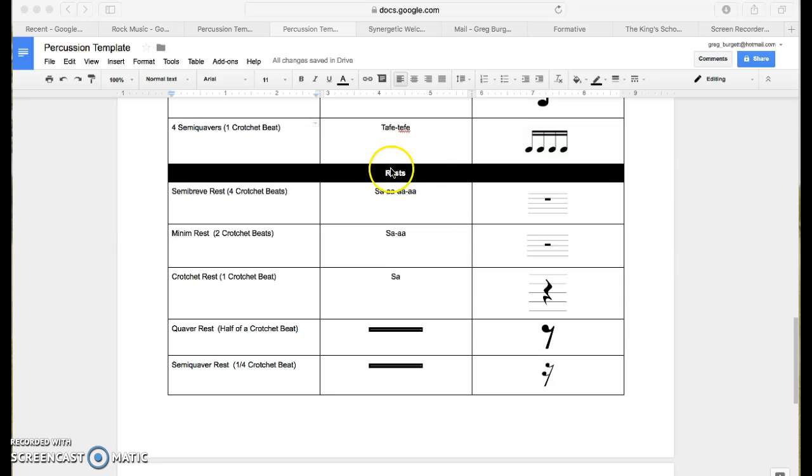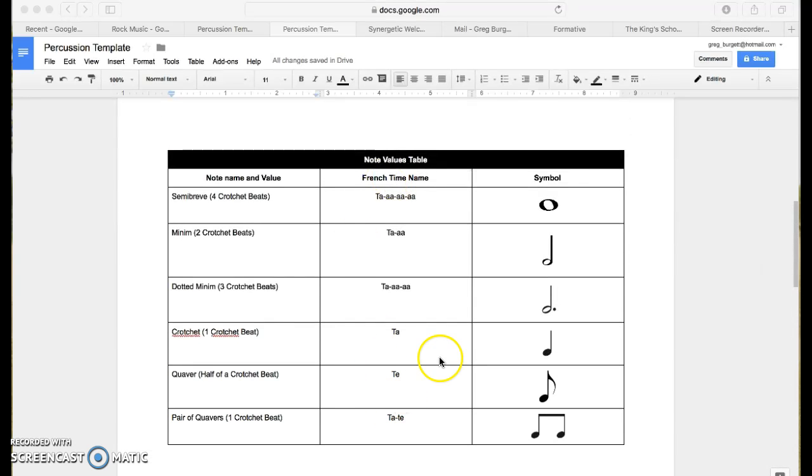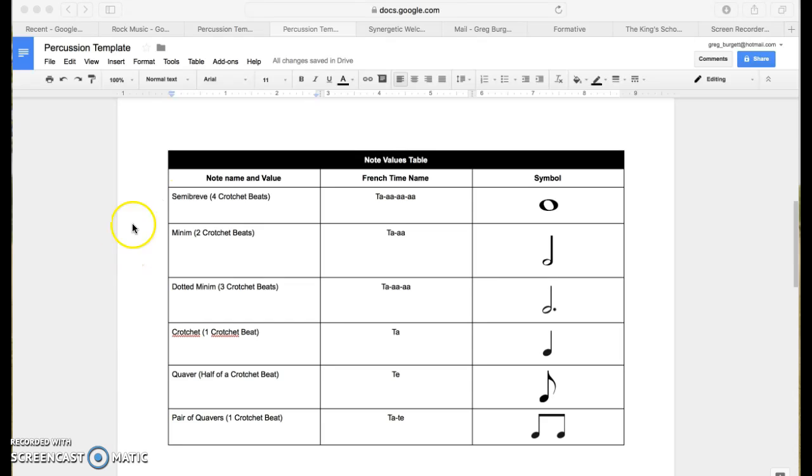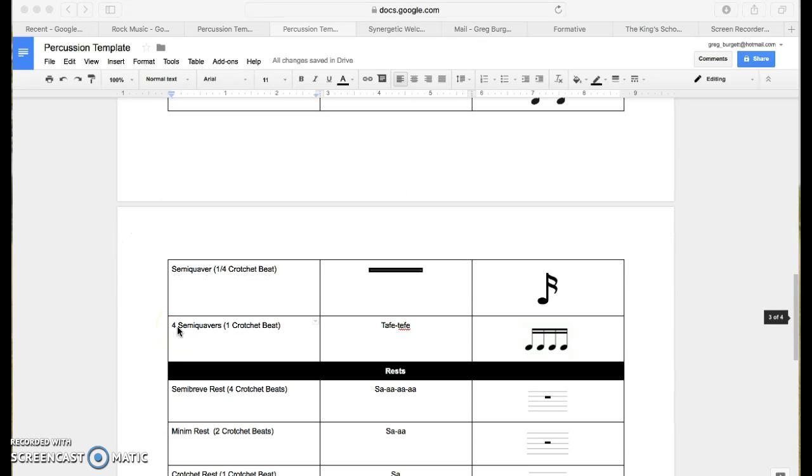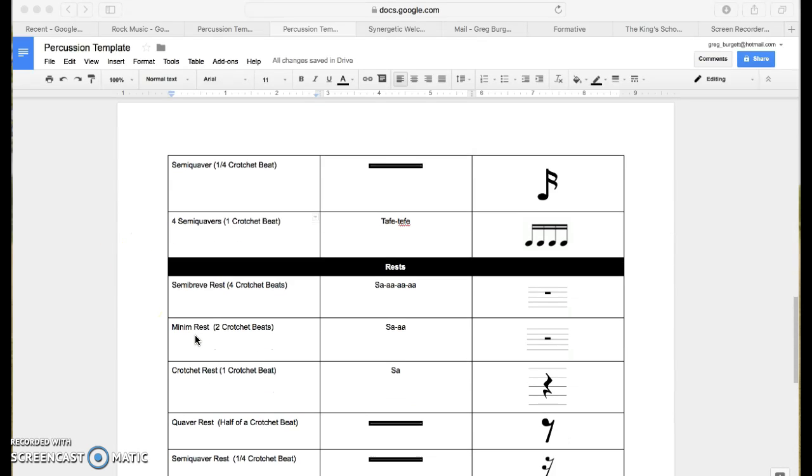There's rests, don't forget, and then there's note values, all of these different note values we've been learning all about them. So we've got semi-breves all the way through to semi-quavers and their equivalent rests.